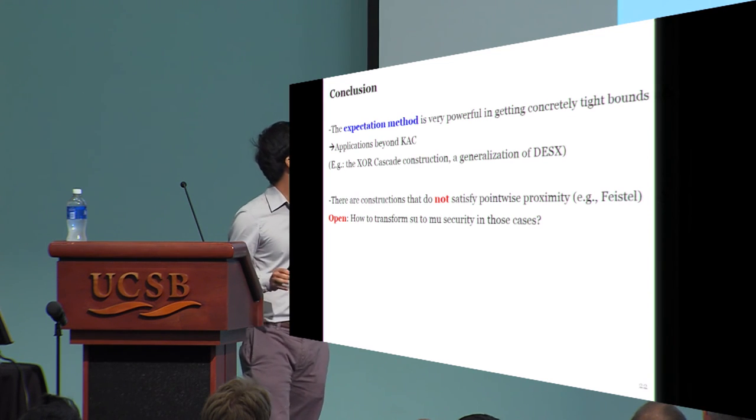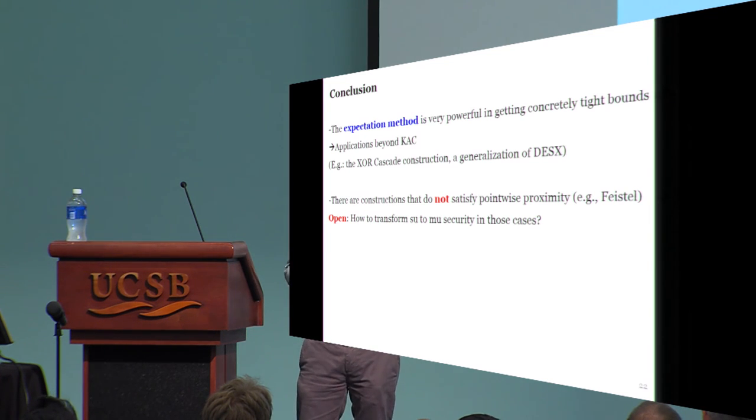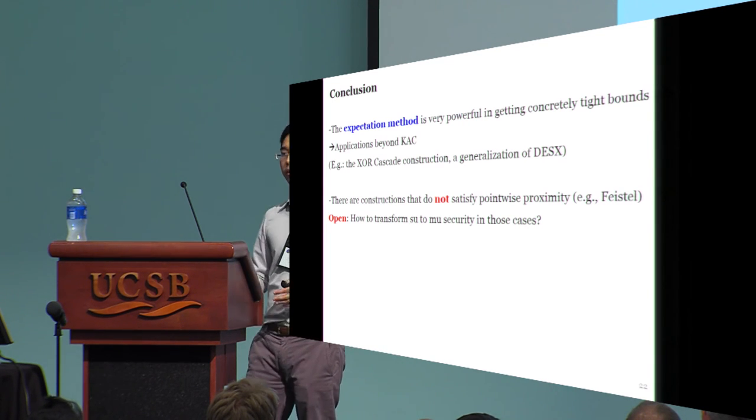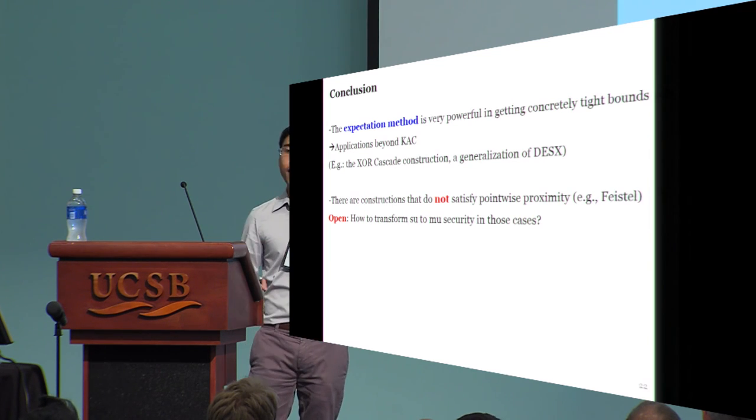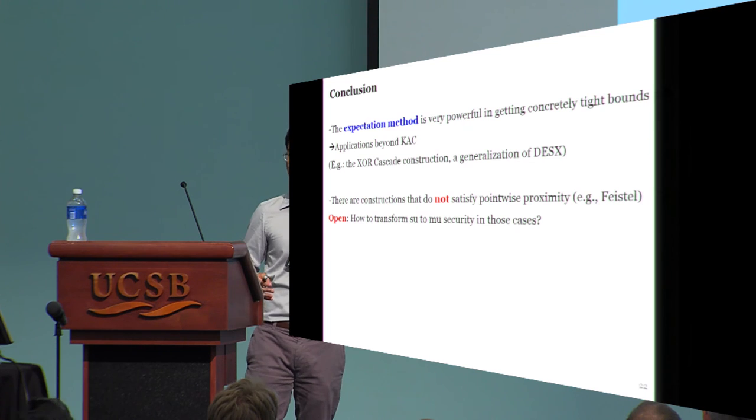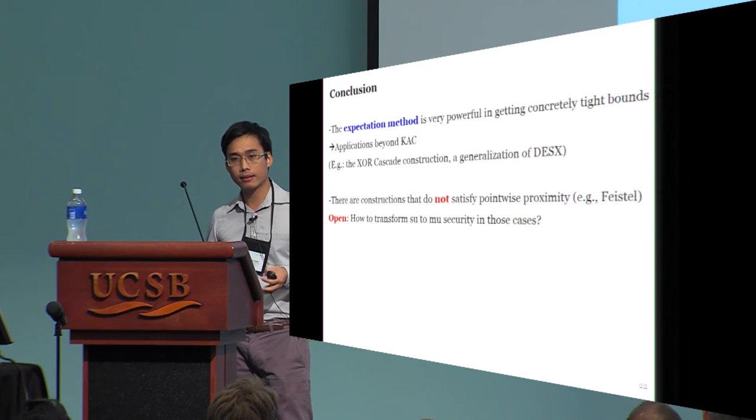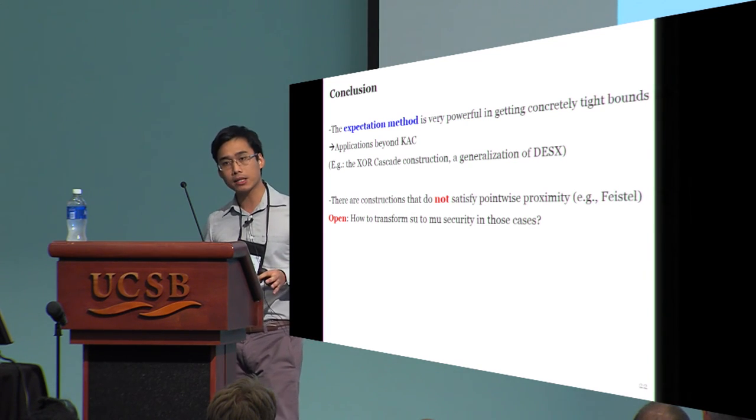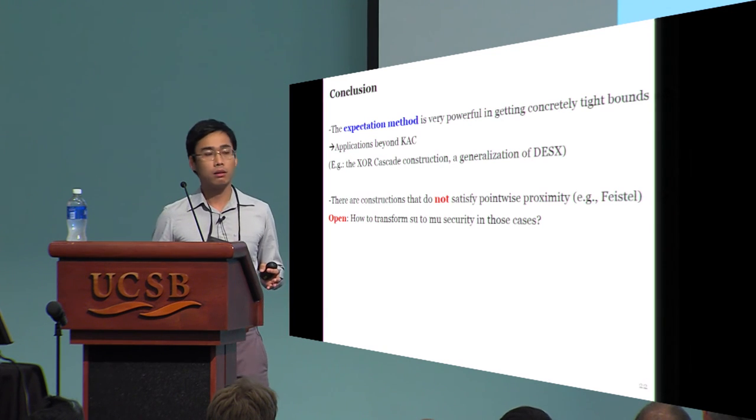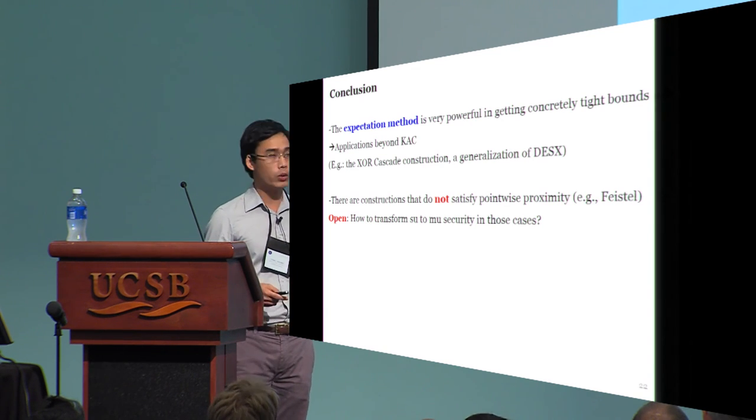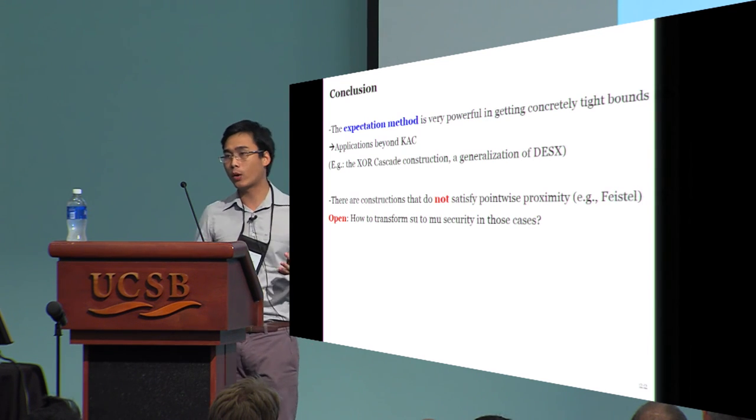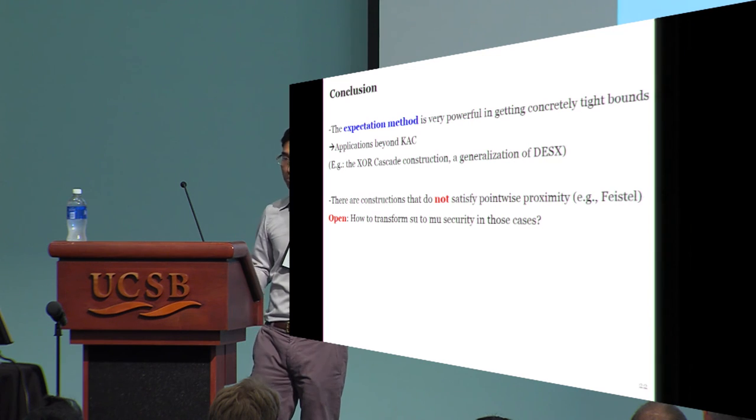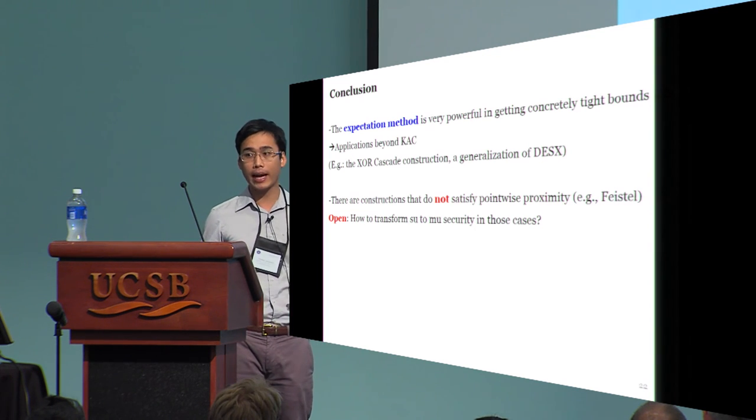Summing up, today we presented two proof techniques for the KAC problem, namely the expectation method and the generic translation. The former is very powerful in getting concretely tight bounds, and it has applications beyond the scope of KAC. For example, in our paper, we also consider the XOR cascade construction, which is a generalization of DES.